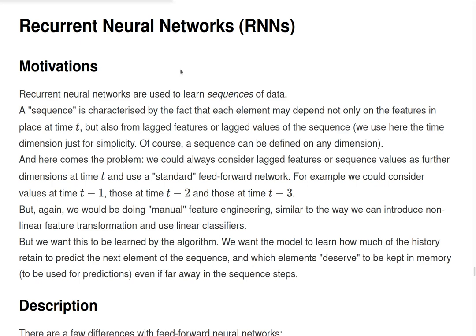We arrive at the last kind of neural network that we will study, the so-called recurrent neural networks. These are used to learn sequences of data, but what is the characteristic of a sequence?